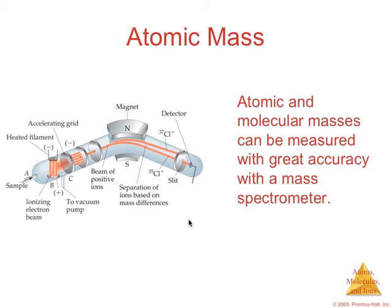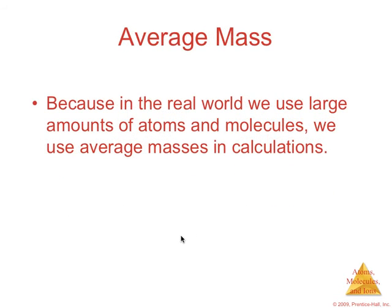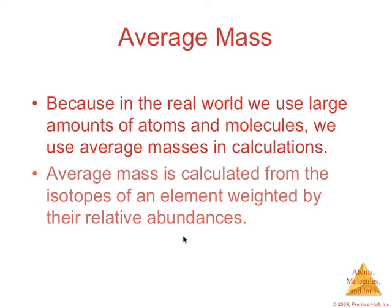We'll talk about a mass spectrometer later. But you can measure atomic and molecular masses of isotopes using a mass spectrometer. Average mass is what we use in calculations because, remember, we're using a huge amount of atoms and molecules when we're talking about real measurable quantities of a substance. And that average mass is the weighted average of their isotopes.